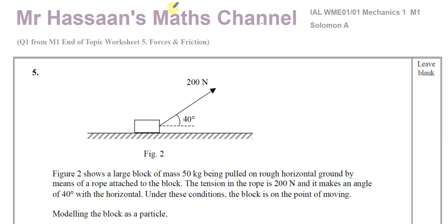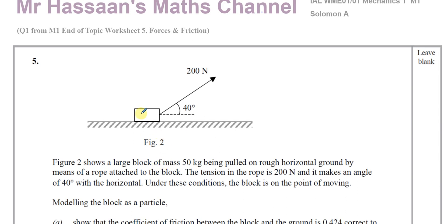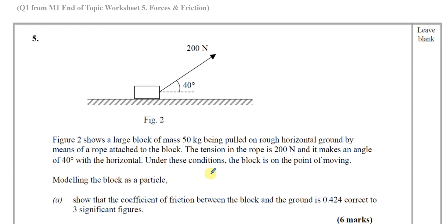Welcome back, this is Mr. Hassan's Maths channel. I'm now answering question number five from the Solomon A Mechanics M1 paper, which corresponds to question number one from my end of topic worksheet on forces and friction. This question tells us about a large block of mass 50 kilograms being pulled on a rough horizontal ground by a rope. The tension in the rope is 200 newtons and it makes an angle of 40 degrees with the horizontal. Under these conditions, the block is on the point of moving. Modelling the block as a particle, show the coefficient of friction between the block and the ground is 0.424 correct to three significant figures.